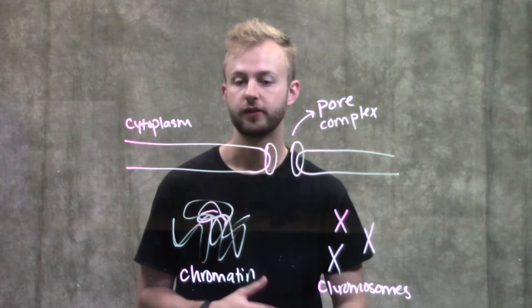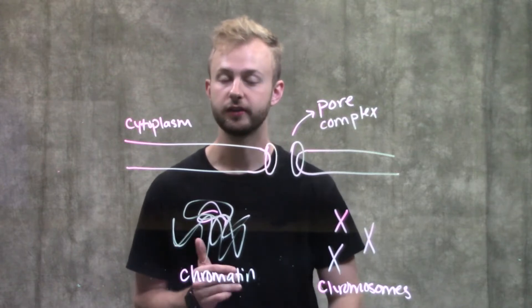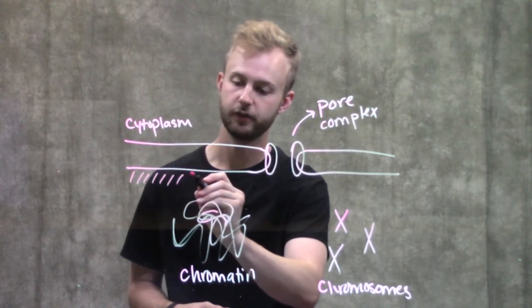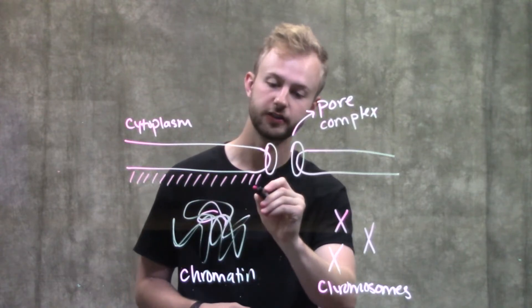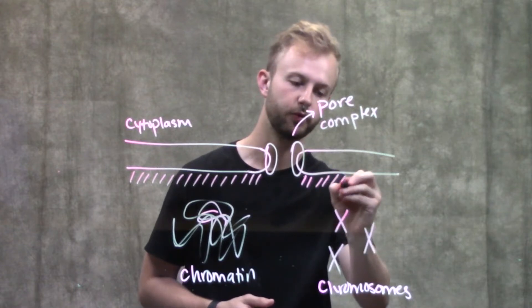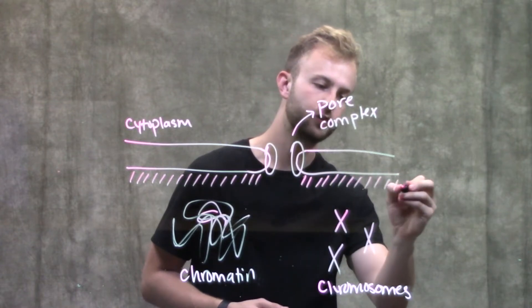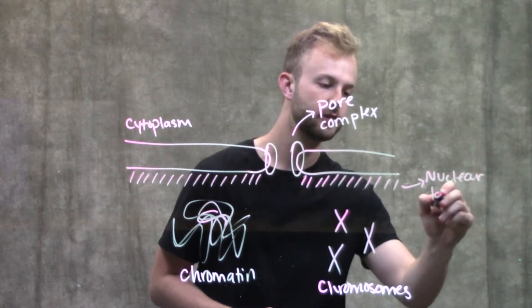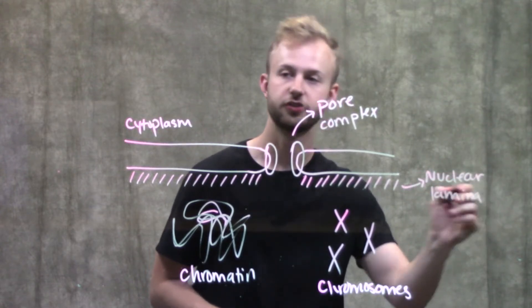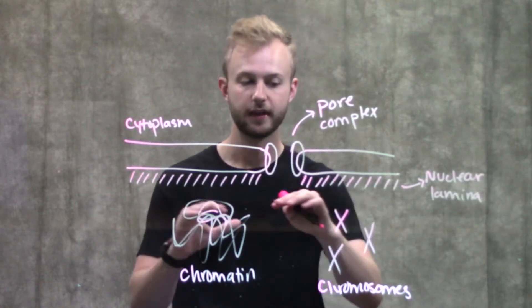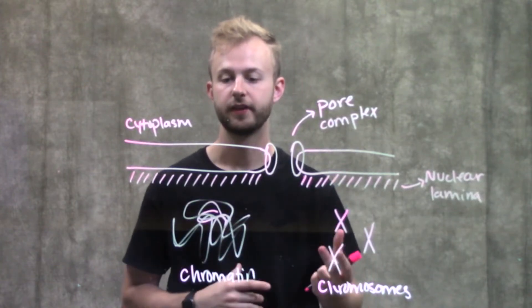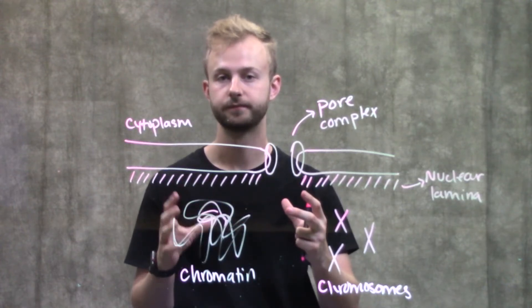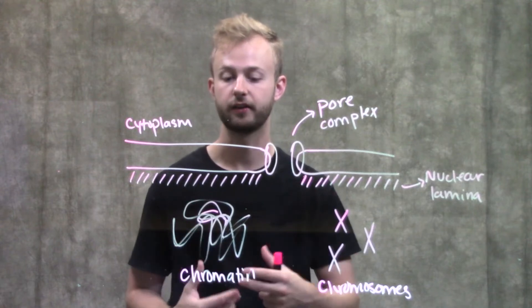Another important structure in the nucleus is the nuclear lamina. The nuclear lamina lines the inner side of our nuclear membrane, except for at the nuclear pores. This is a meshwork of proteins that helps give the nucleus its shape and maintain it. If we didn't have this nuclear lamina underneath, the nucleus would have a difficult time staying the right shape and not collapsing on itself.